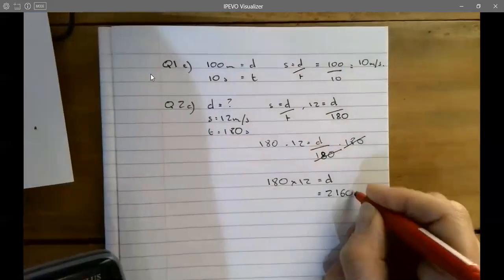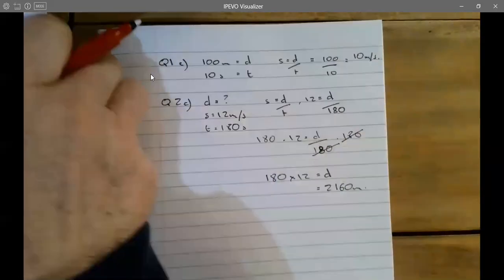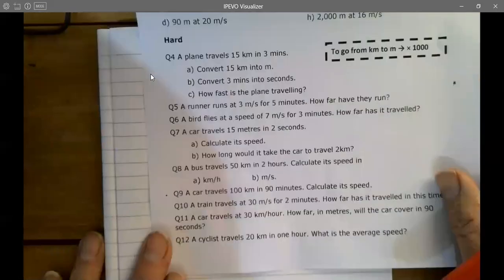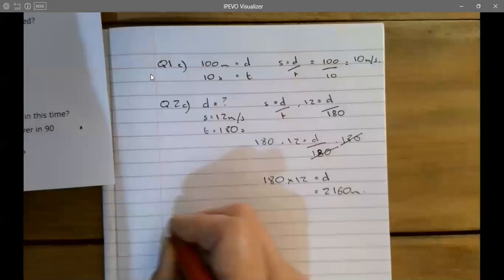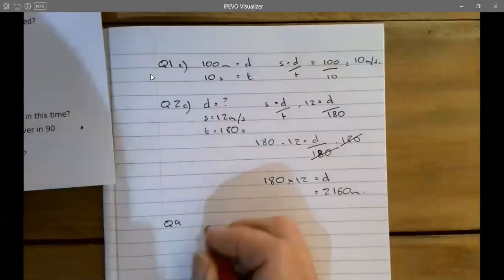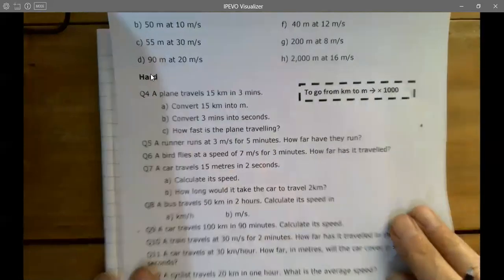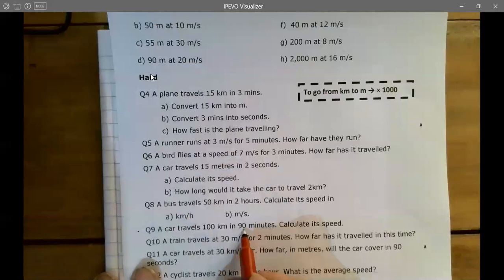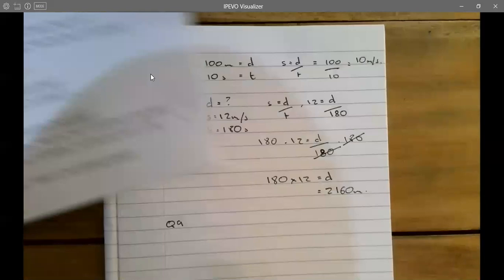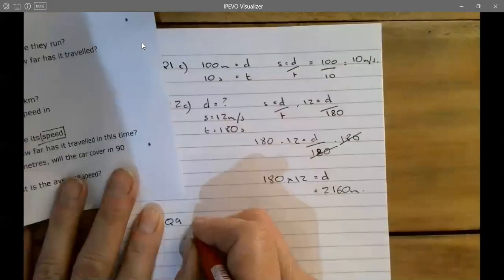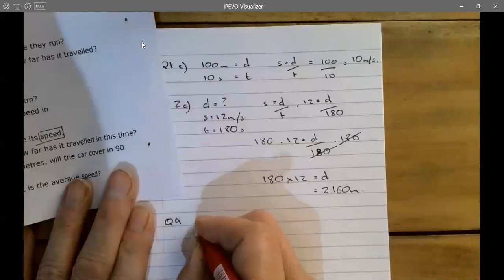Now moving on to a hard question, question number nine. A car travels 100 kilometers in 90 minutes. Calculate its speed. This is the data I've got: the distance is equal to 100 kilometers and the time is equal to 90 minutes.